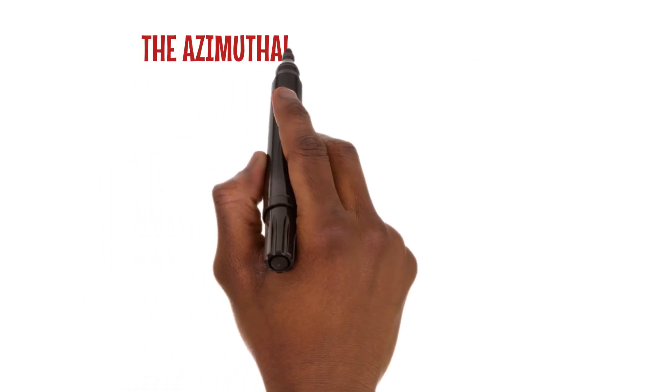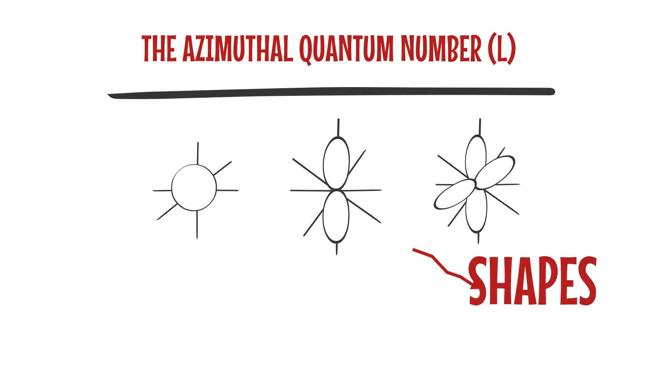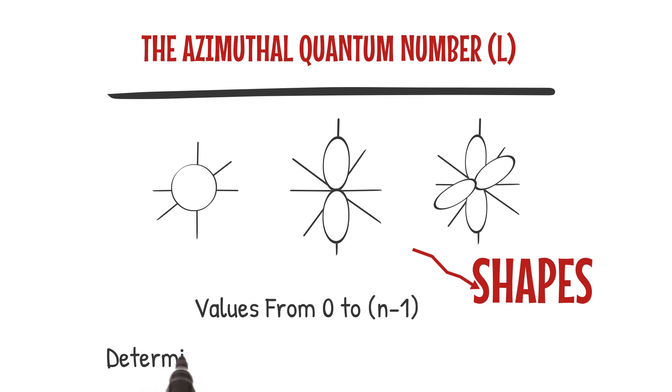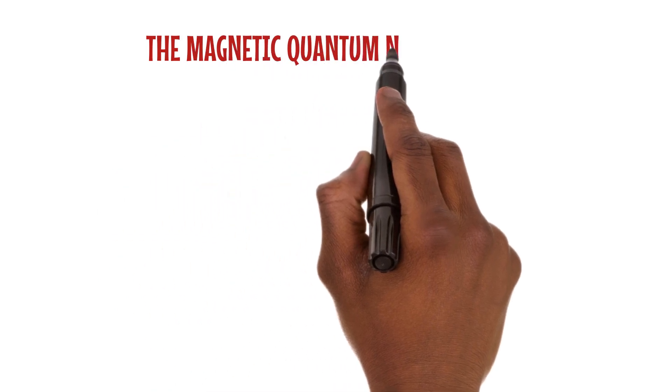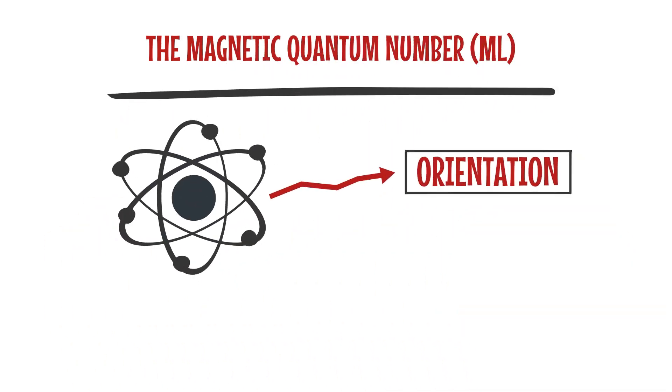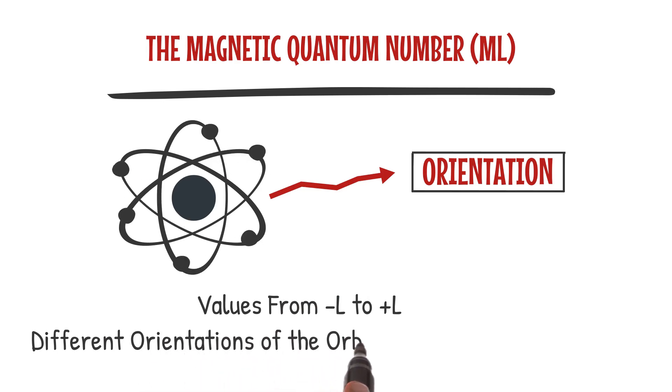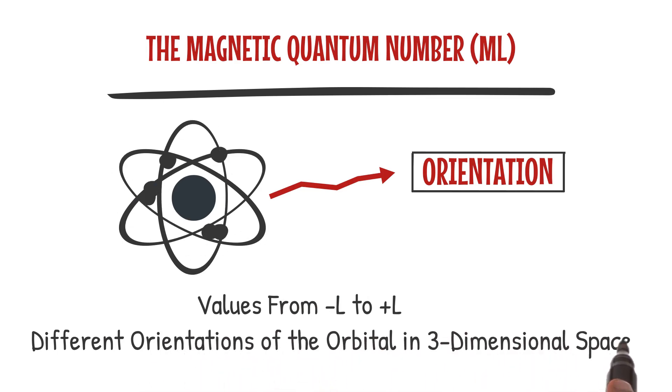The azimuthal quantum number l is responsible for the shape of the orbital. It can have values from 0 to n-1 and determines the type of subshell or orbital within a given energy level. The magnetic quantum number ml specifies the spatial orientation of the orbital. It can have values ranging from minus l to plus l, representing the different orientations of the orbital in three-dimensional space.